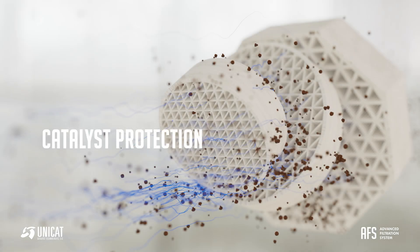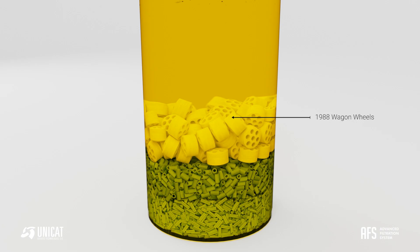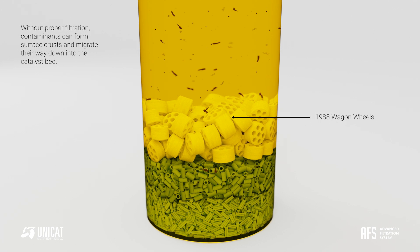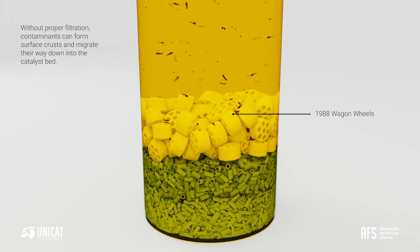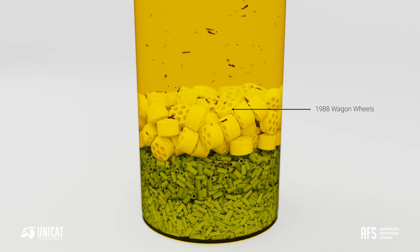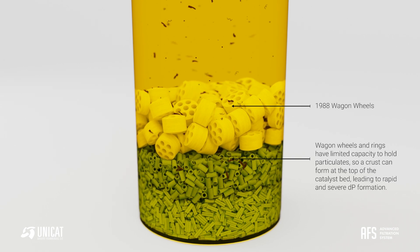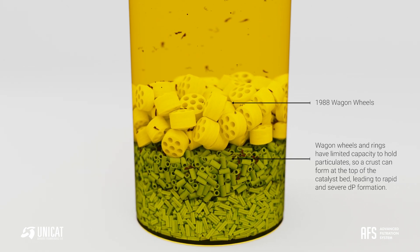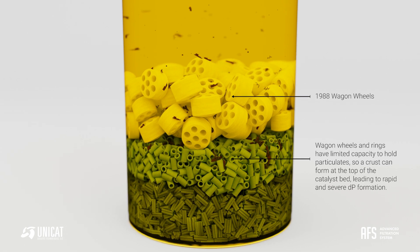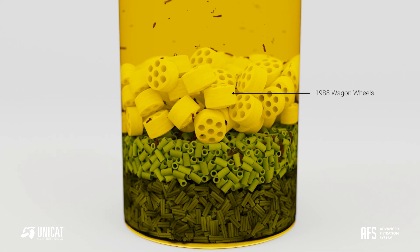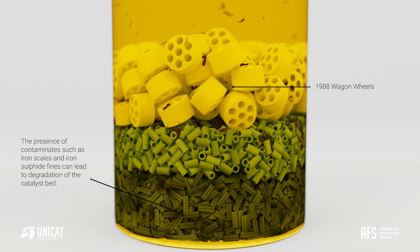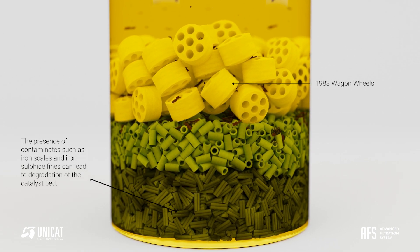The 1998 wagon wheel. Without proper filtration, contaminants can form surface crusts and migrate their way down into the catalyst bed. Wagon wheels and rings have limited capacity to hold particulates, so a crust can form at the top of the catalyst bed, leading to rapid and severe differential pressure formation. The presence of contaminants such as iron scales and iron sulphide fines can lead to degradation of the catalyst bed.